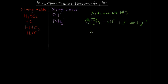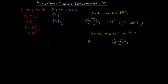We know that bases accept protons. So if a base accepts a proton from a water molecule — we have a base and a water molecule, and the water molecule sends a proton over to the base — the base accepts the proton, and the water molecule is left with one less hydrogen and one less positive charge, giving it a negative charge. So it becomes a hydroxide ion.